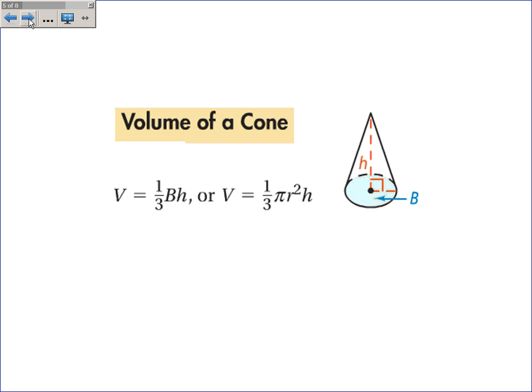The volume of a cone is also one-third of the area of the base times the height. But just for convenience, we've plugged in what the area of the base is, pi r squared. So the volume of a cone is one-third pi r squared h.